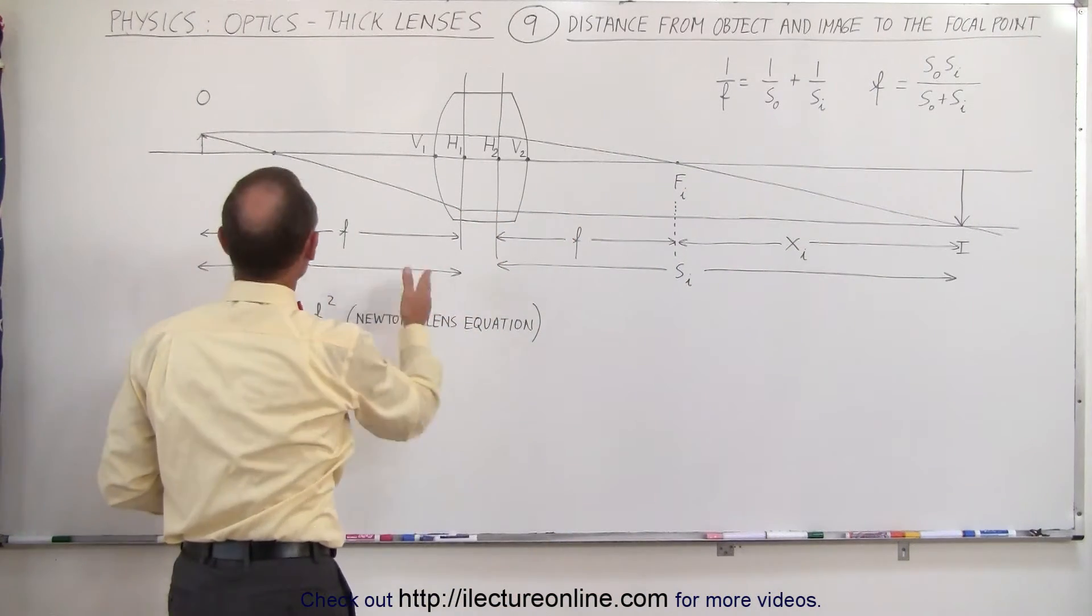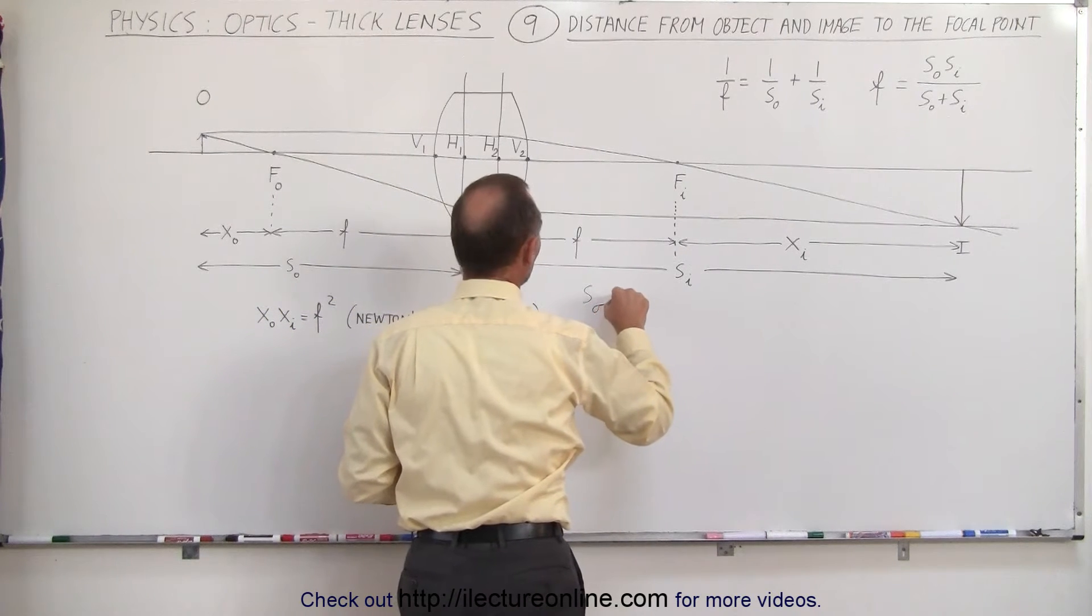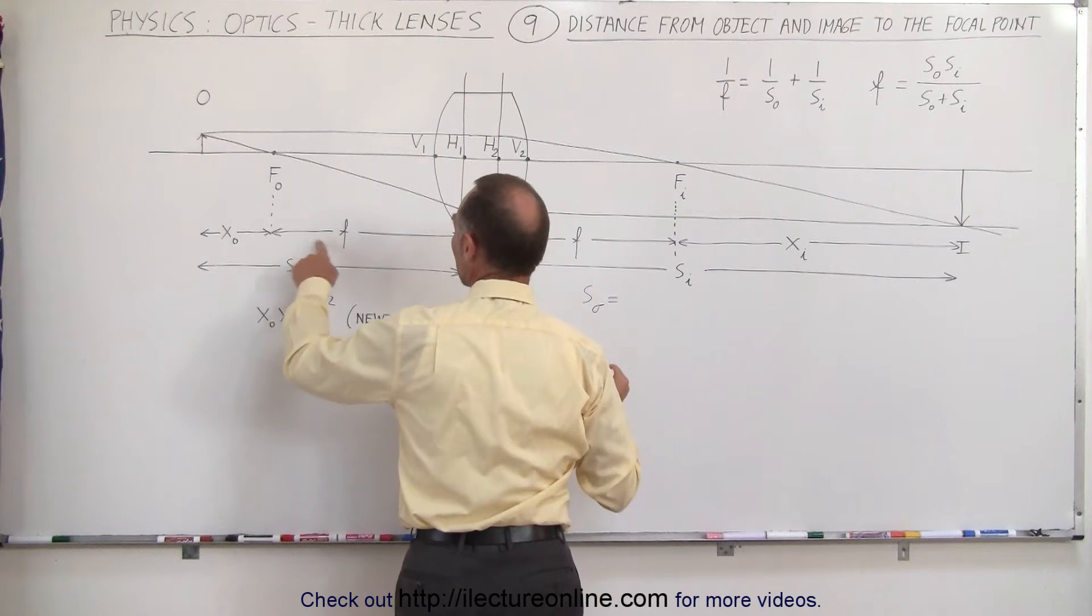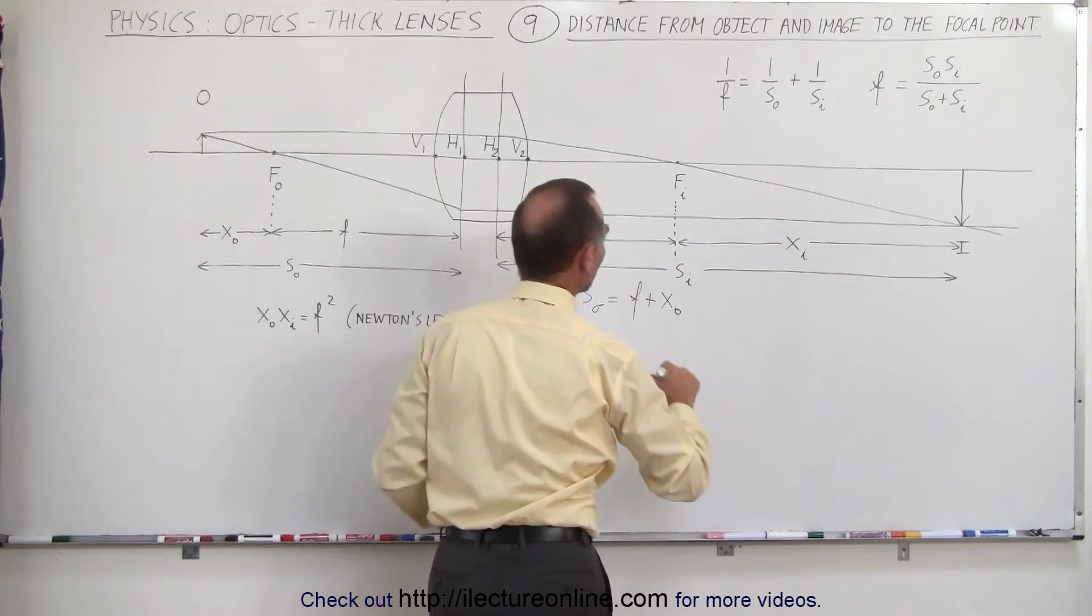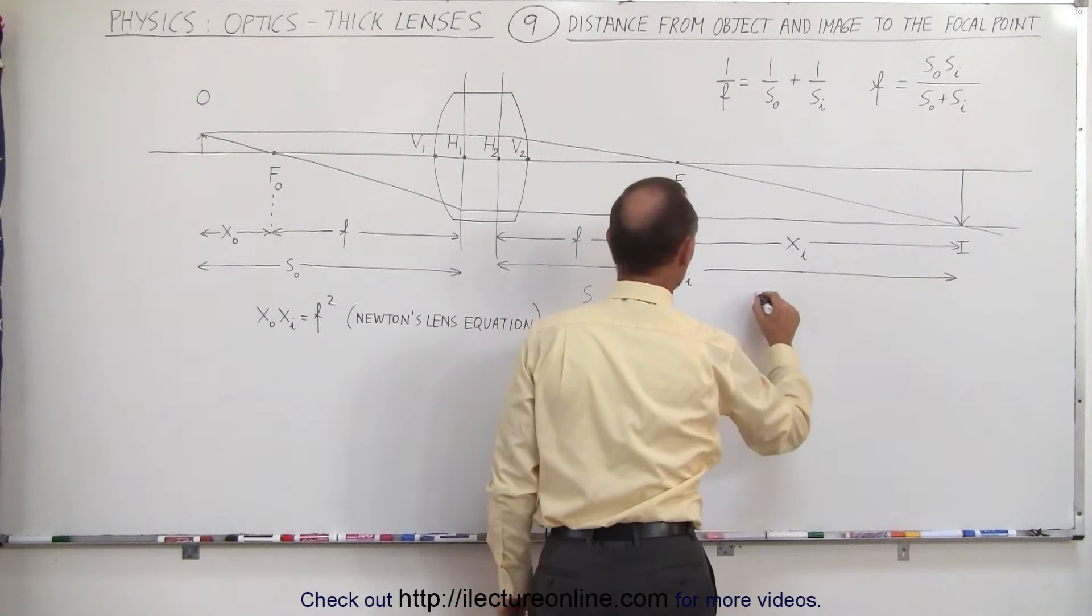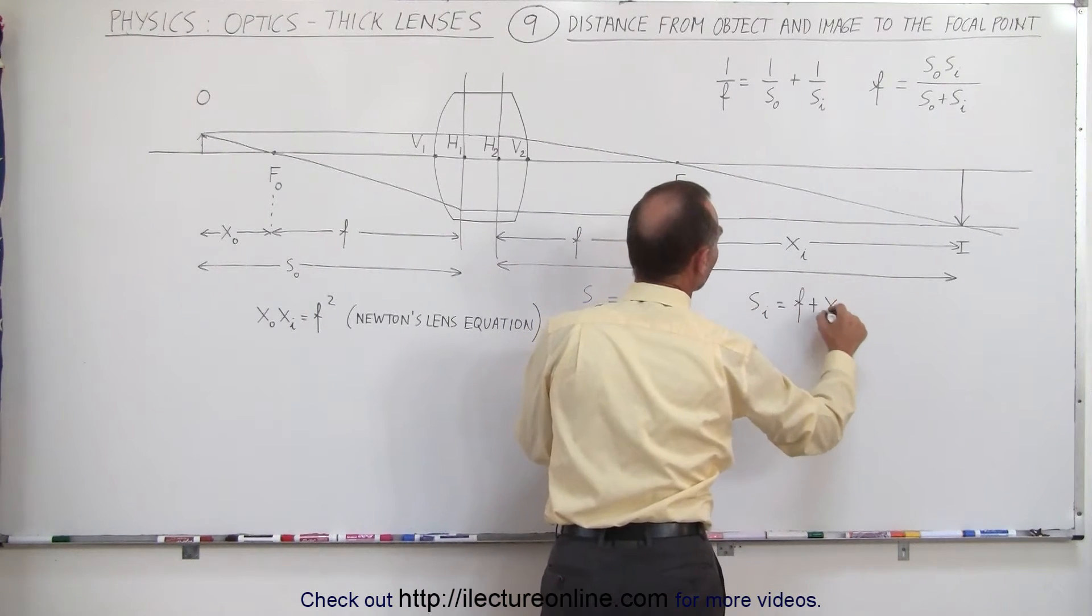Looking at this we can realize that the object distance s sub o is simply the sum of the focal length plus x sub o. And we can see that the image distance s sub i is equal to the focal length plus x sub i.